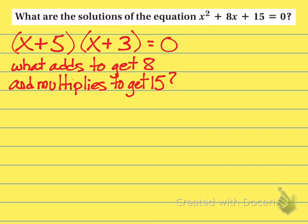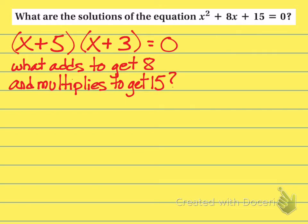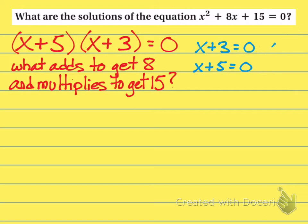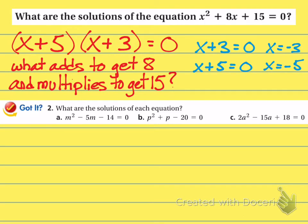If you already have the binomials, you can just start figuring out what makes them become zero. If you have a trinomial, you have to do the factoring process first, then figure out what makes the individual parts equal zero. So we set x plus 3 equals zero and x plus 5 equals zero, subtract 3 and subtract 5 respectively, giving x equals negative 3 and x equals negative 5.